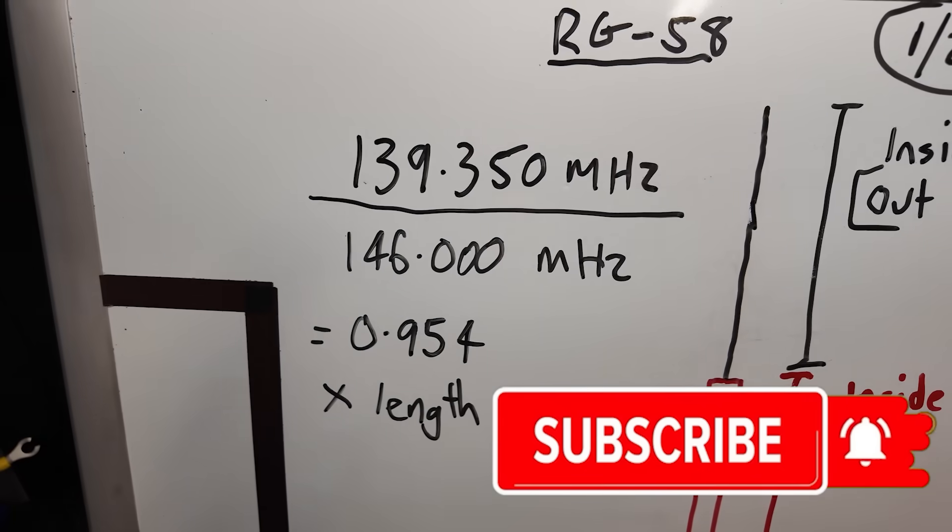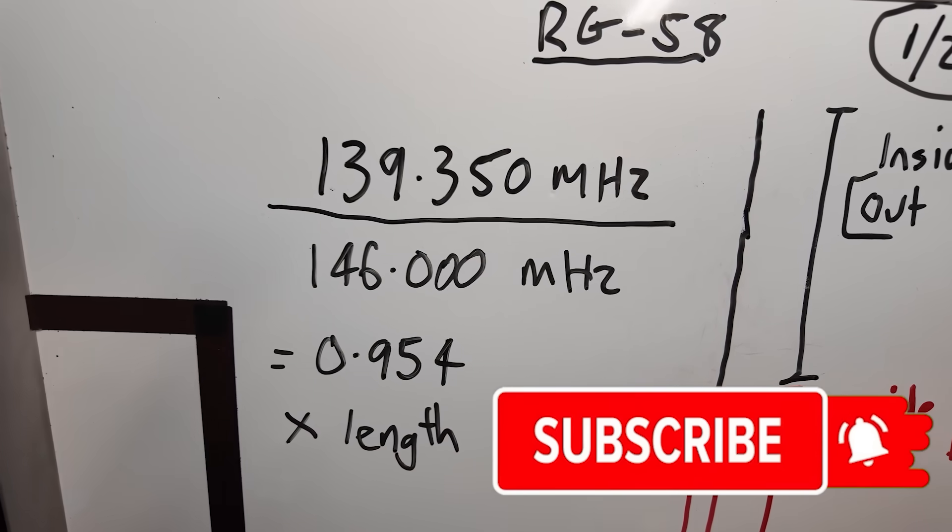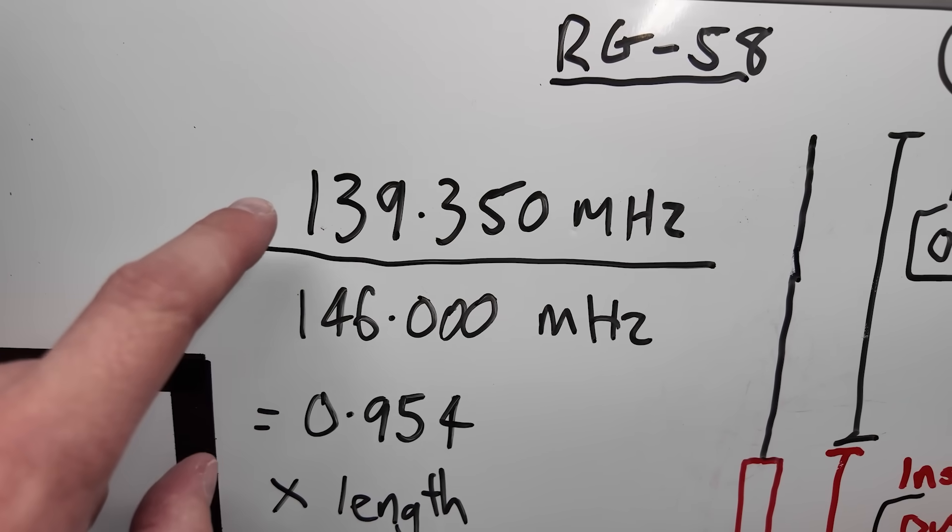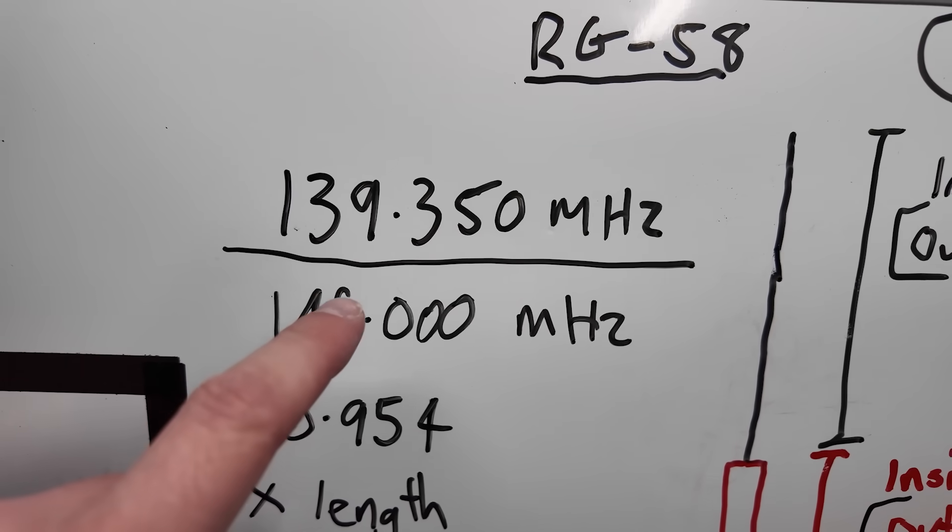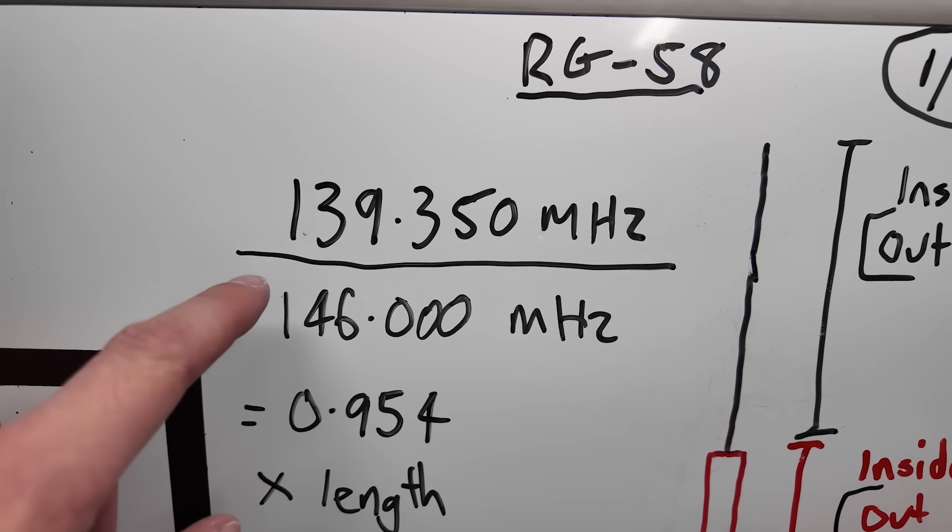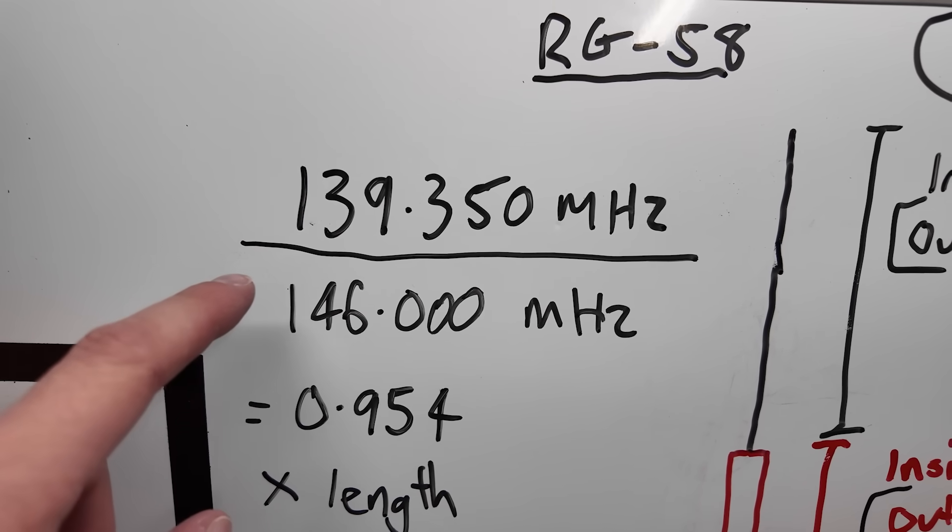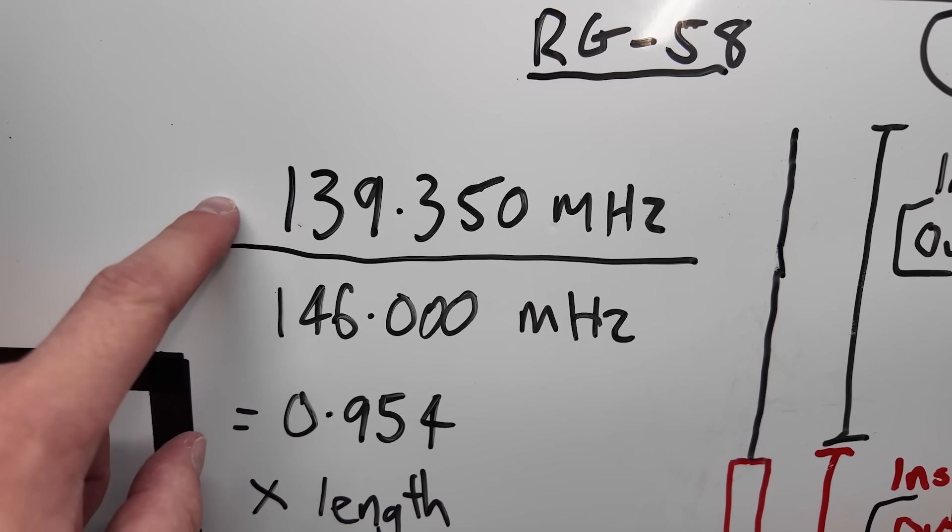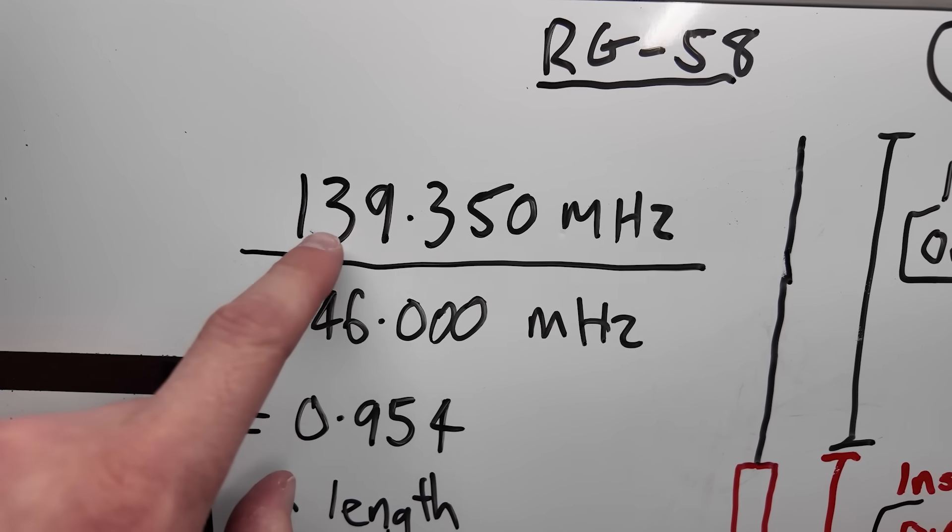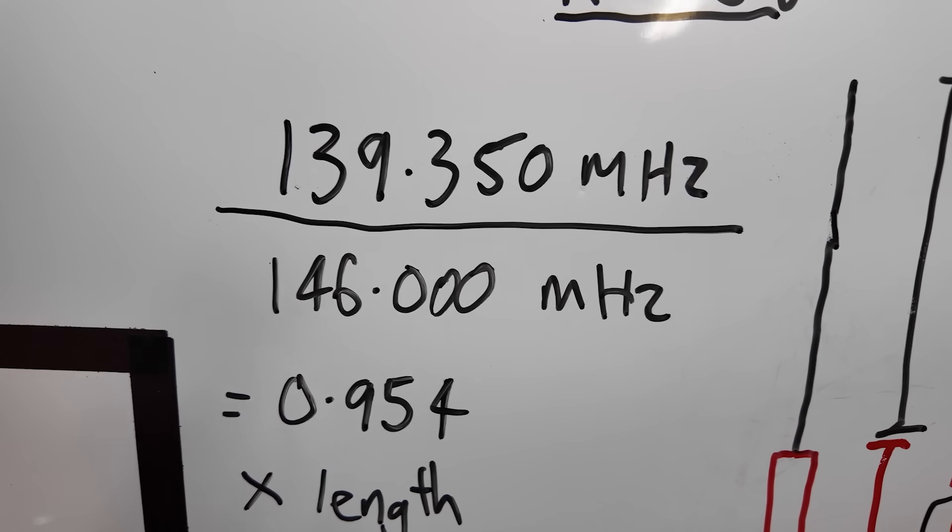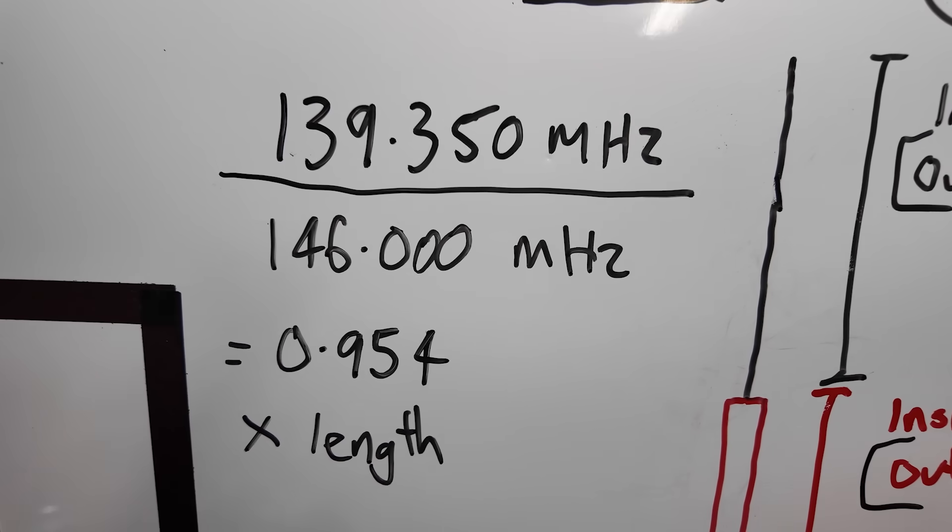Okay, hopefully I can explain this. It was very windy outside as well, by the way. So we had the lowest SWR at 139.350 megahertz, which is way too low. So what we want to do is, because effectively the antenna is longer than it needs to be, we can shorten it. So what we do is we take the frequency with the lowest SWR at the moment, which is 139.350, and we divide it by the frequency that we want, which is 146 megahertz, right in the middle of the two meter band.